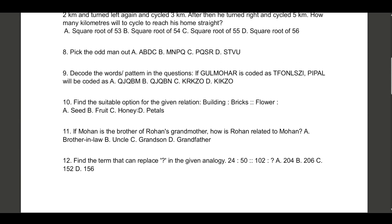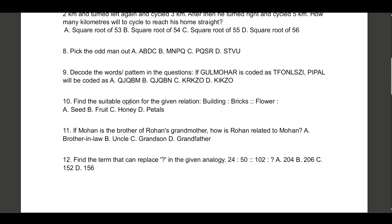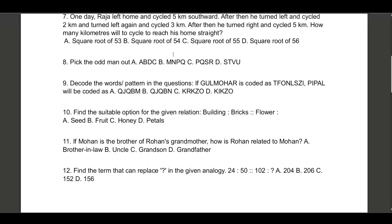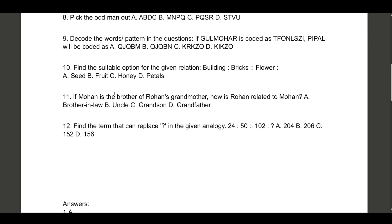Option A, square root of 53, confirmed as question seven's answer. Question eight — find the odd man out. A B D C: A B is normal, D C is reverse. M N P Q: O is missing and it's in consecutive form, not reverse. P Q R S — S R is reverse, P Q is normal. S T U V — same pattern. Option B is clearly the odd one out since it has a missing letter in a non-alternating pattern.